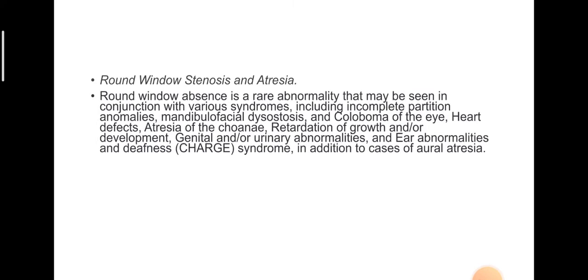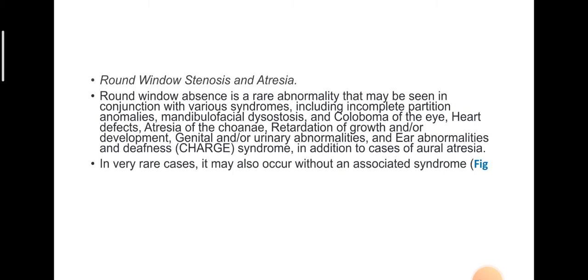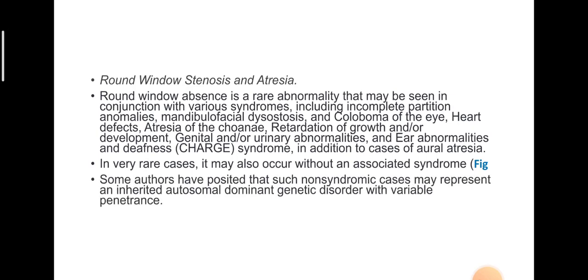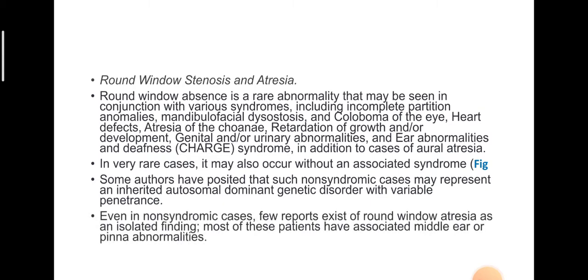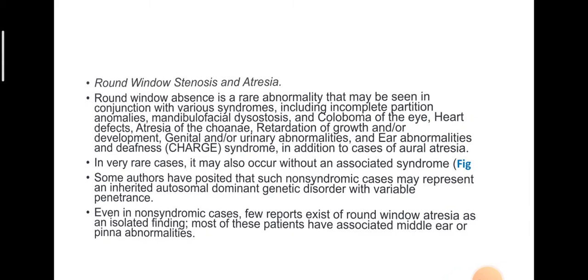Round window stenosis and atresia: round window absence is a rare abnormality that may be seen in conjunction with various syndromes including incomplete partition anomalies, mandibulofacial dysostosis, and CHARGE syndrome — coloboma of the eye, heart defects, atresia of the choanae, retardation of growth or development, genital or urinary abnormalities, and ear abnormality and deafness. In very rare cases it may also occur without an associated syndrome, possibly representing an inherited autosomal dominant genetic disorder with variable penetrance. Most non-syndromic cases have associated middle ear or pinna abnormalities.